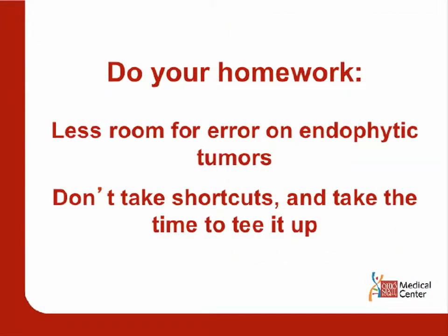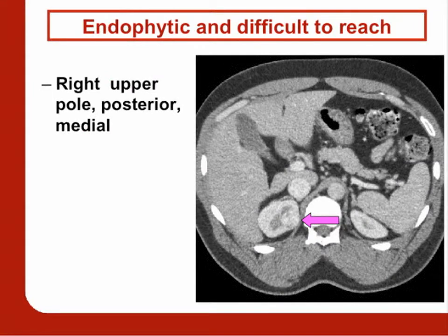And lastly, do your homework. With endophytic tumors there's less room for error, so you shouldn't take any shortcuts. You can sometimes take shortcuts with partial nephrectomies and get away with it — but not with endophytic tumors. Before I put the clamp on and start cutting the kidney, I want to be 100% sure I've optimized the situation: How is the kidney facing me? Have I cleaned enough fat off? Have I really ultrasounded well enough to understand where this tumor is?